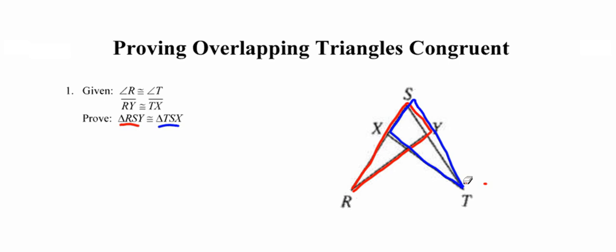We would consider those overlapping triangles. The most significant factor to your success when proving overlapping triangles congruent is to separate the two triangles. So I'm going to go ahead and draw these two triangles separate from one another.